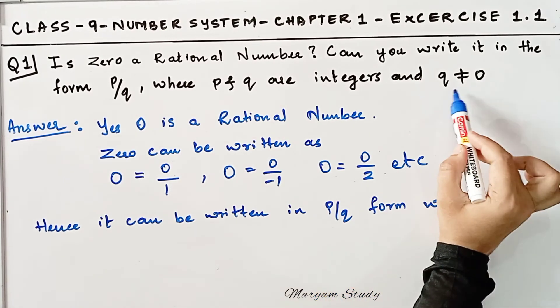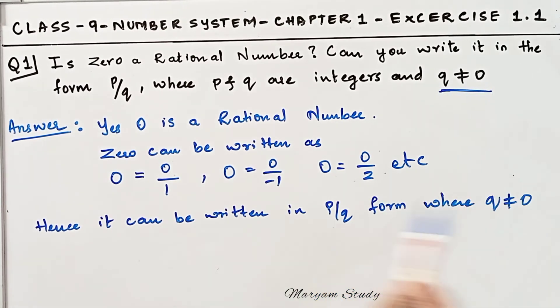What is our condition? Q is not equal to 0. This is what happens in the denominator - Q is not 0. So that's why 0 is a rational number. Hence, it can be written in P by Q form where Q is not equal to 0.